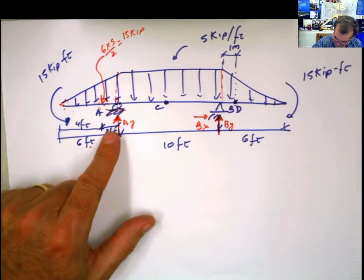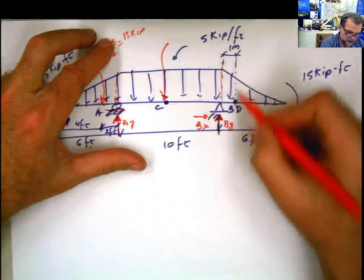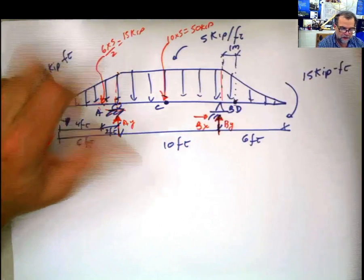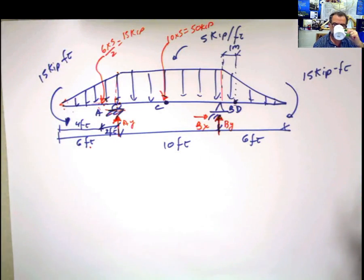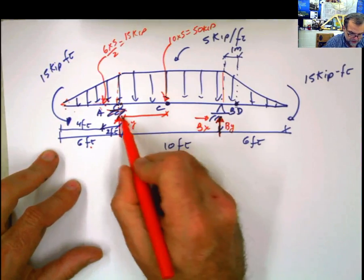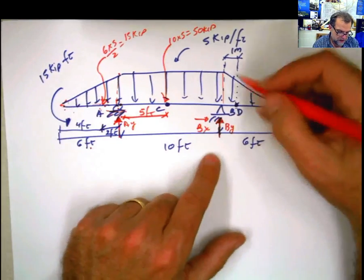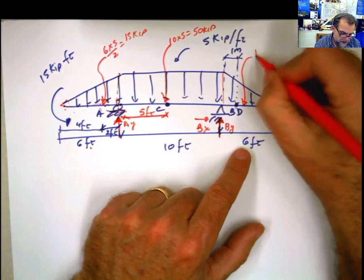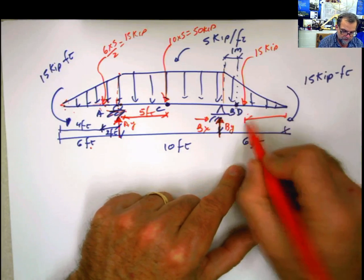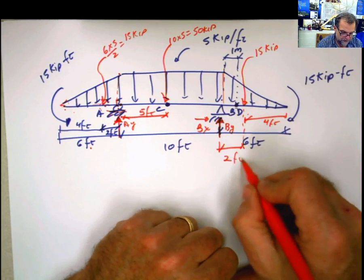The rectangular load is equivalent to one load applied at the center with magnitude equal to the area: 10 times 5 equals 50 kips, located at the center, which is 5 feet. This triangle is similar to the other, producing a force of 15 kips — area 5 times 6 divided by 2 — with the same location: 4 feet from the acute angle or 2 feet from the right angle.